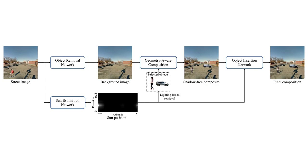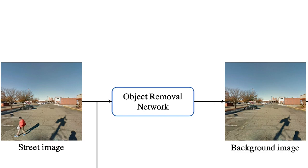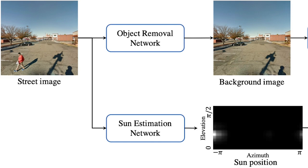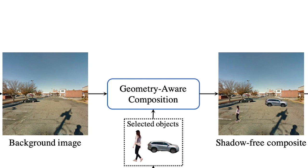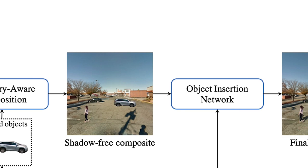Our framework has four major components: a removal network that learns to remove existing objects and their shadows; a sun estimation network that learns to predict sun position from an image, which helps identify comparable objects for insertion; a method to scale the inserted object properly with correct occlusion order based on its placement in the scene; and an insertion network that learns to cast shadows for newly inserted objects.